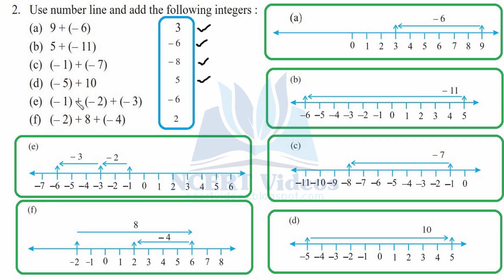Part e: minus one, then minus two — that is towards the left-hand side, two points. We reach minus three. Hold your location, then again minus three towards the left-hand side: one, two, three. Eventually you reach at minus six. Part f: minus two — initial position at minus two — then plus eight towards the right: one, two, three, four, five, six, seven, eight. You are at six. Now minus four: one, two, three, four. You reach at two. That is how you do question two.